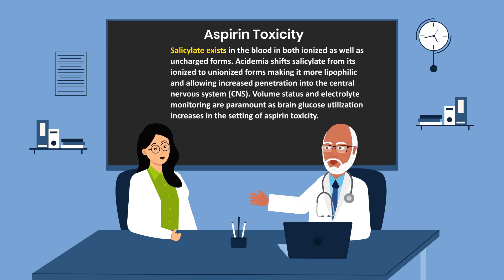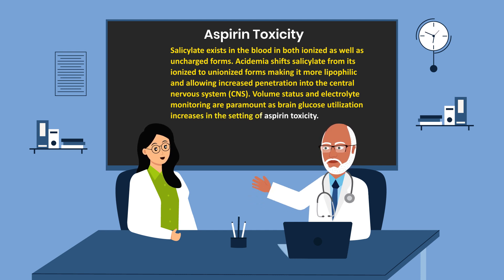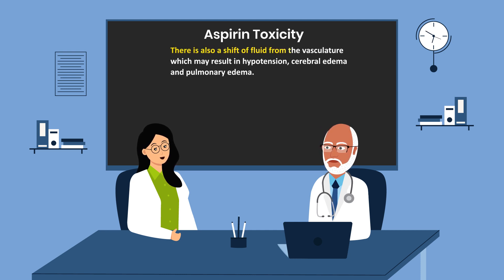Salicylate exists in the blood in both ionized as well as uncharged forms. Acidemia shifts salicylate from its ionized to unionized form, making it more lipophilic and allowing increased penetration into the central nervous system. Volume status and electrolyte monitoring are paramount as brain glucose utilization increases in the setting of aspirin toxicity. There is also a shift of fluid from the vasculature, which may result in hypotension, cerebral edema, and pulmonary edema.